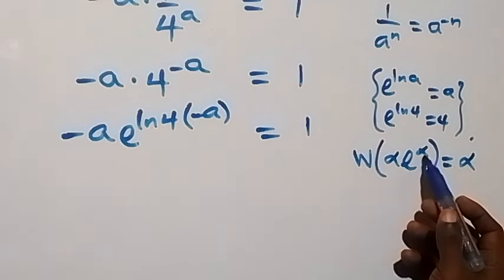And also, 2 here can be written as exponent ln 2, which implies that here we have minus a ln 4 equals W of ln 2 times exponent ln 2. When we look at the W function — W of alpha times exponent alpha equals alpha — the power and coefficient are the same, so this simplifies to ln 2. Therefore, minus a ln 4 equals ln 2.